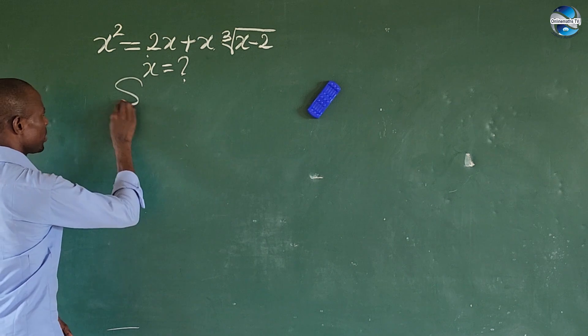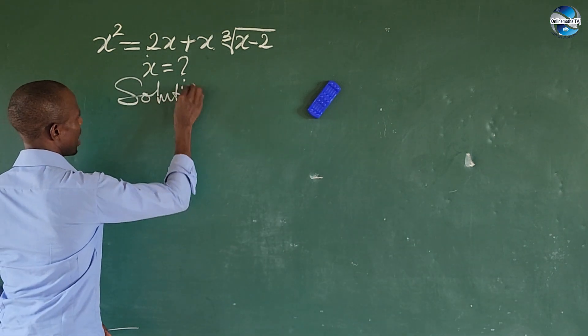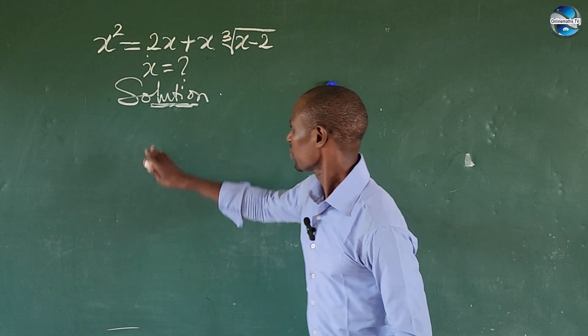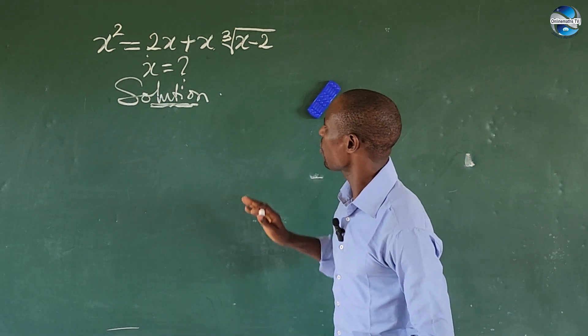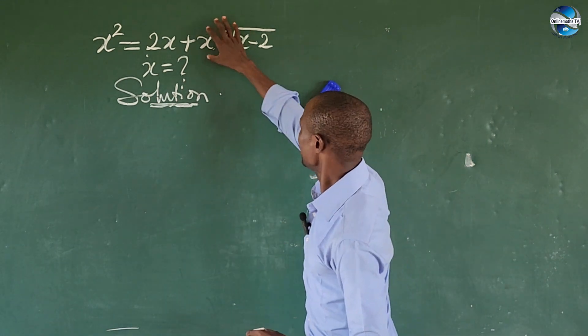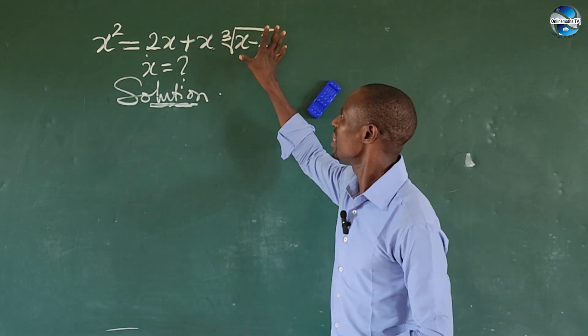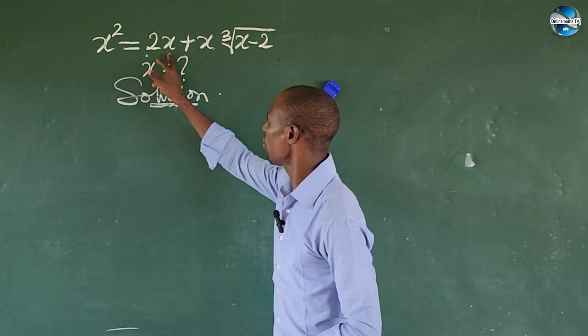What will be the value of x? The first thing we take is our solution. What do we do here? This quantity containing the radicals, I want to leave it on the right hand side, then move all of this to the right hand side.